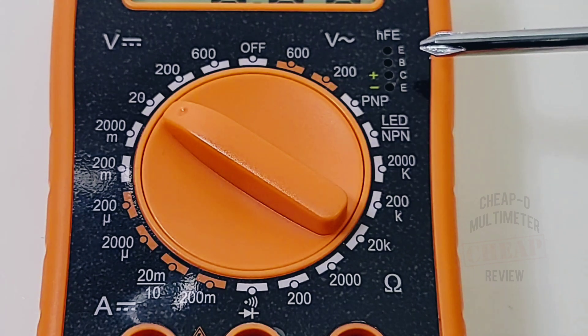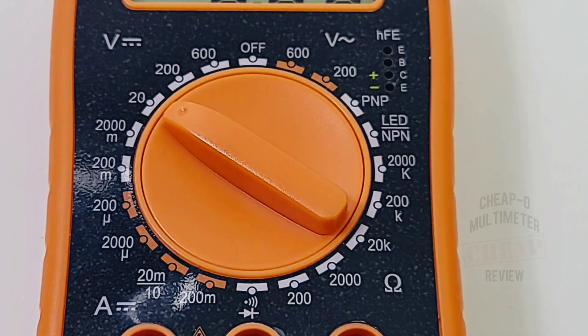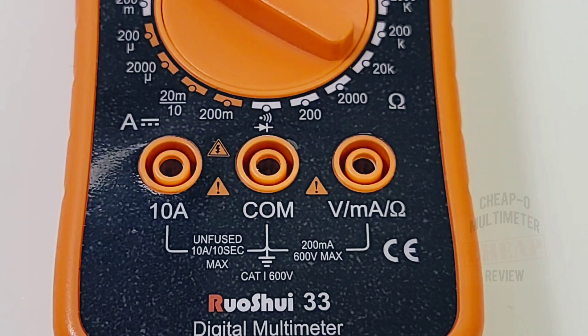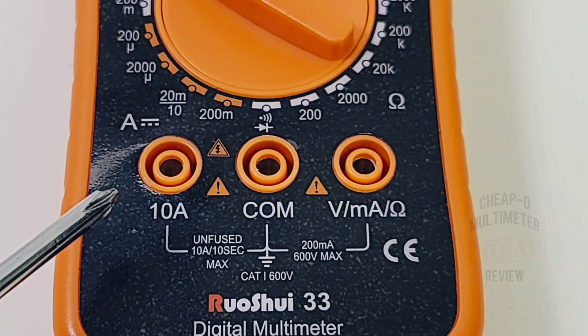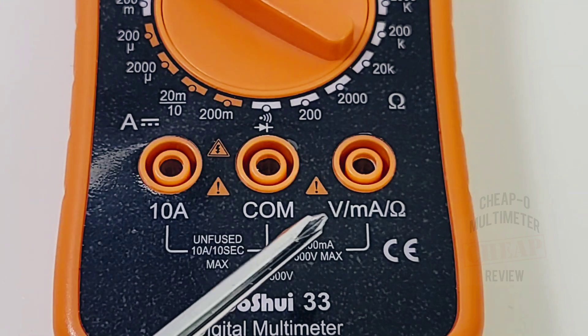At the top of the meter we have our HFE transistor inserts. That's it, no other buttons or backlights. The bottom we have our inputs, three in total: high current on the left, in the middle our common or ground, and on the right our voltage, milliamps, and resistance.